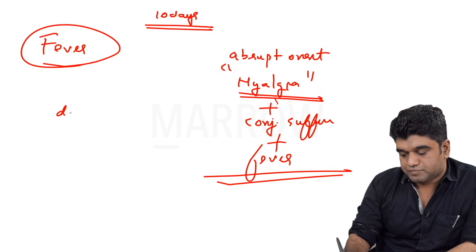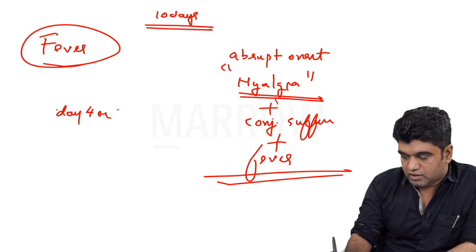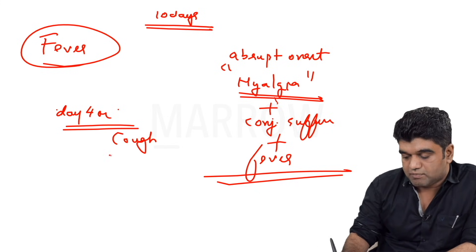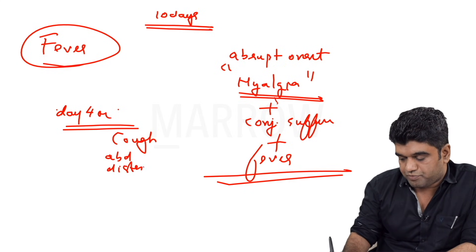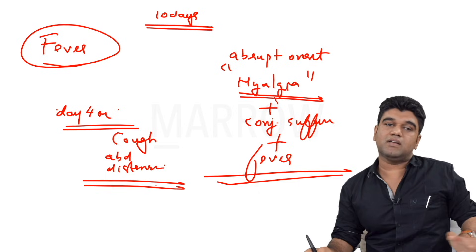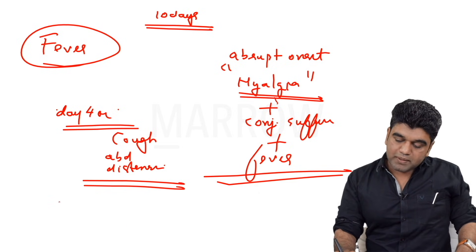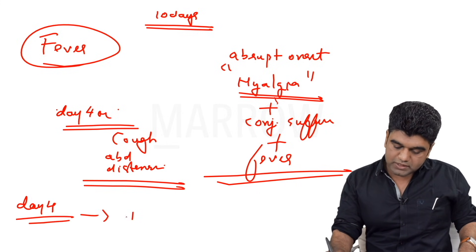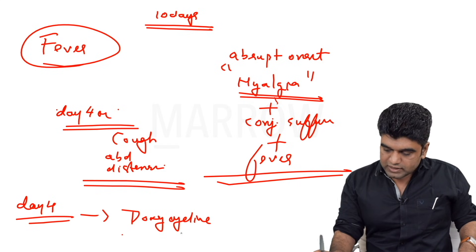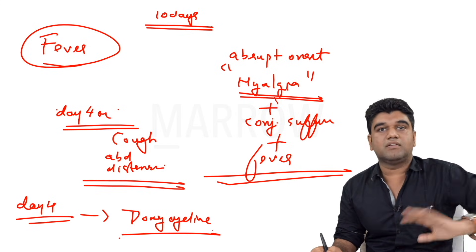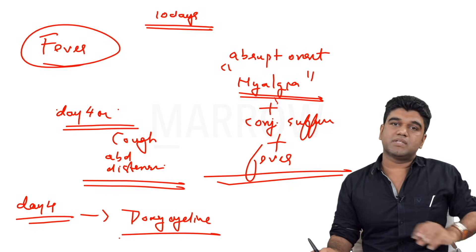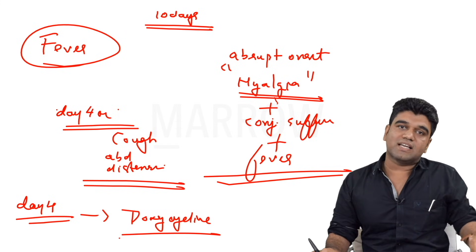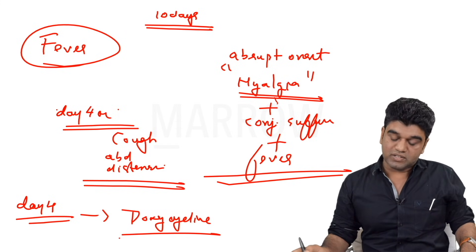By day four or five, you start to see many of these patients have cough and some degree of abdominal distension. It's not 100% classical but this is generally the pattern. The patient generally tends to do well because by day four most of the time we are starting this patient on doxycycline, and doxycycline tends to fare very well against leptospirosis.